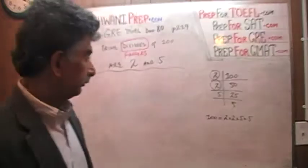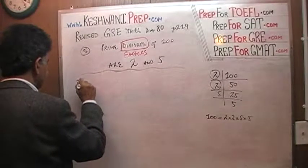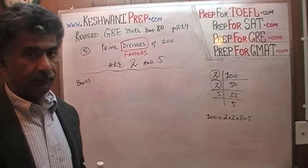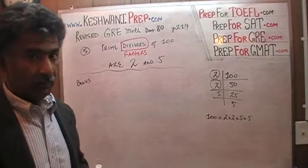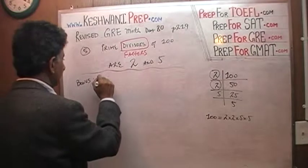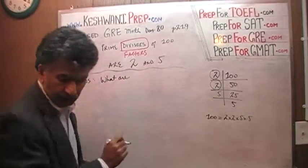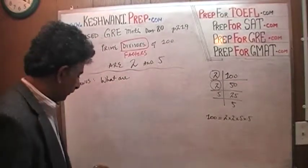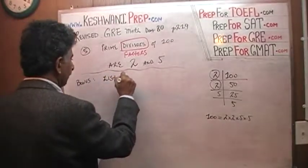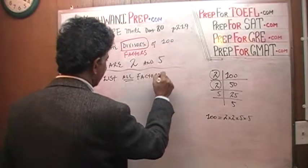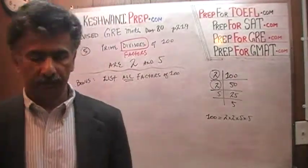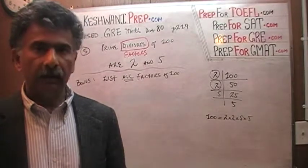I'm going to give you a bonus question. Here's the bonus question: simply list all factors of 100. All factors. And the key here is to go systematically — slowly, methodically, and systematically — and you will not miss one.